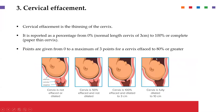Effacement goes together with dilatation, and it is basically the thinning of the cervix. As labor proceeds, cervical thinness increases, going up to a paper-thin cervix. A thick cervix is termed to have a cervical effacement of 0%, and a paper-thin cervix is termed to be 100%. The score is given between 0 and 3 points, with 3 points given when effacement is 80% and above.